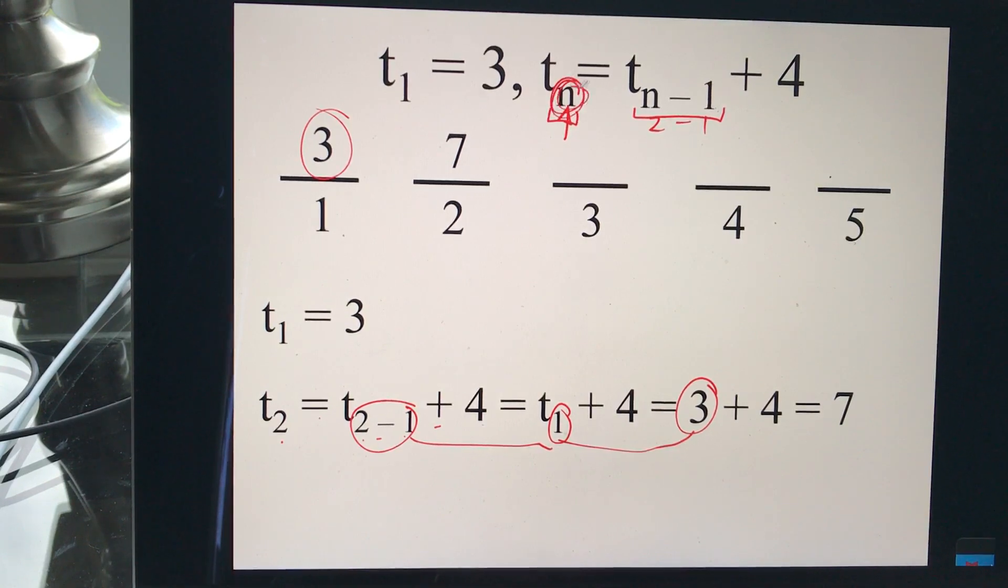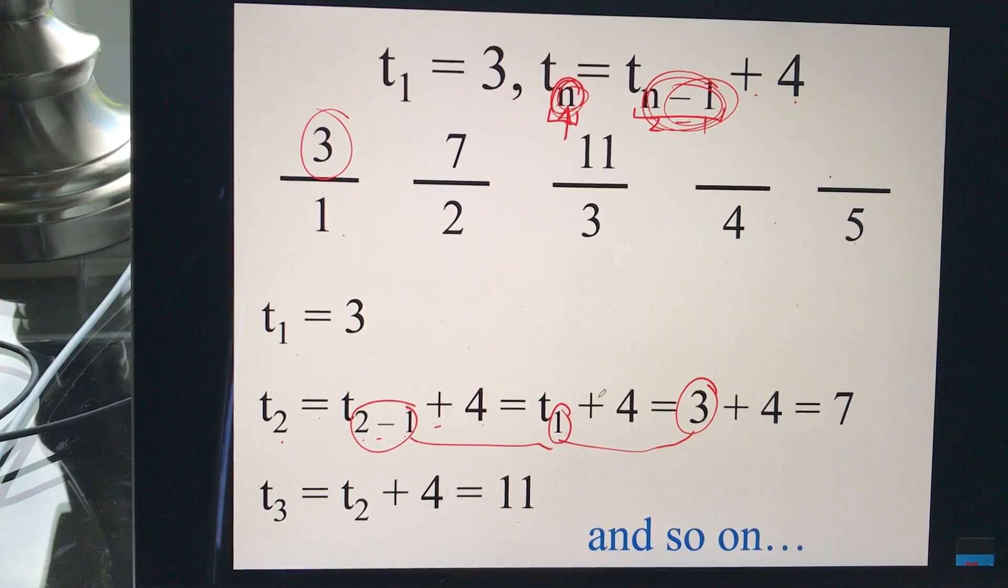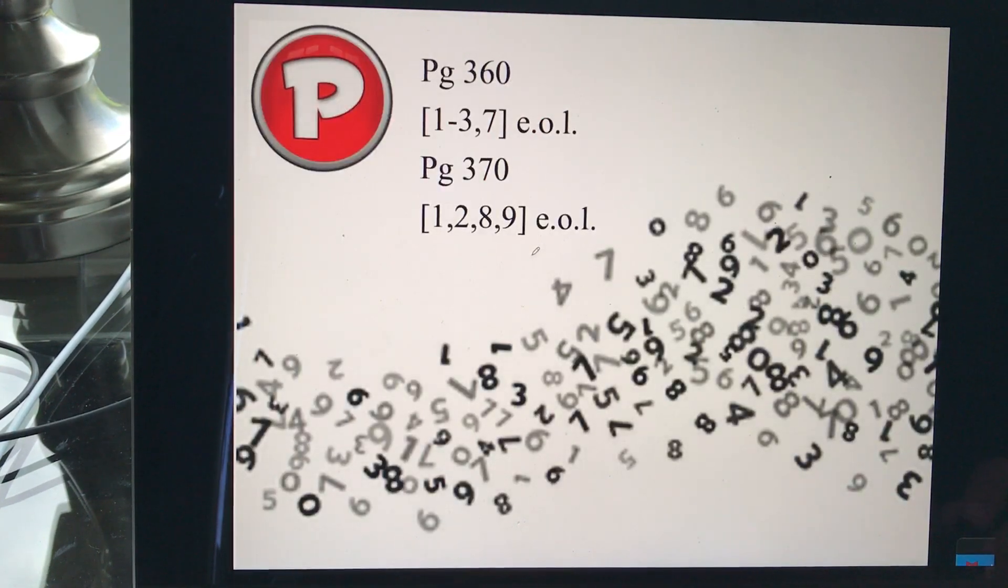So, term 3 says go to term 2 and add 4 because 3 minus 1 is 2. So, term 2 is 7 plus 4, which gives you 11, and so on. And we can keep going on that. Okay, take a look at 360 and 370.